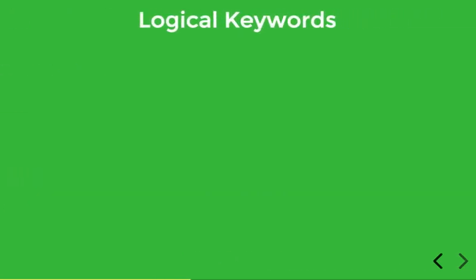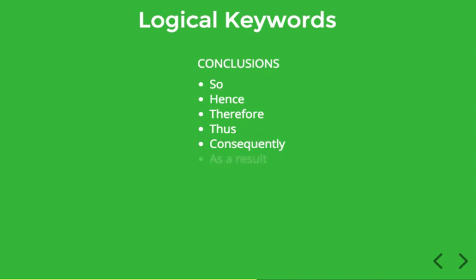So words like 'so' and 'therefore' — and there are others like them — when you see these as you're trying to analyze English sentences into their logical structure, they can be very helpful in clarifying whether we're dealing with a conclusion. These words include: so, hence, therefore, thus, consequently, as a result, and 'it follows that.' There are others, but these are some of the more common ones.